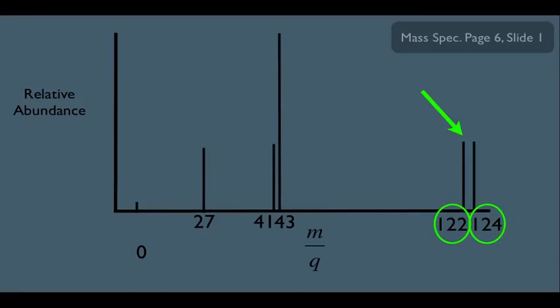If you actually measured the relative heights of those peaks, you'd see one is about 50.69% and the other about 49.31% — not exactly the same, but roughly. This demonstrates the connection between relative abundance of isotopes from general chemistry and the relative heights of peaks on the mass spectrum — there is a direct correlation between these two things.